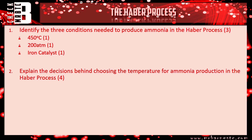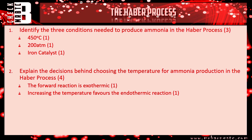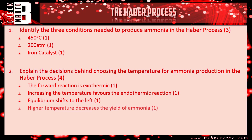Explain the decisions behind choosing the temperature for ammonia production. First, the forward reaction is exothermic. By increasing the temperature, it favours the endothermic reaction, which means the equilibrium is going to shift to the left and you're going to have a lower yield of ammonia. That's four different points for four marks.